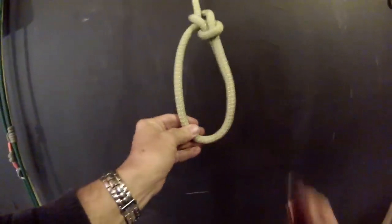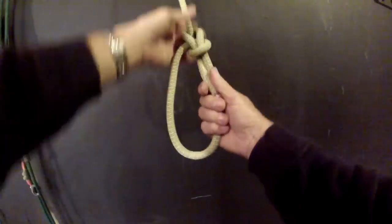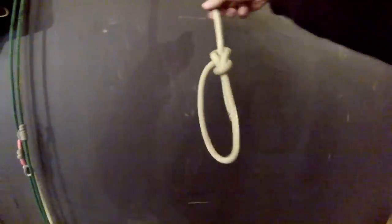Another issue with the Bowline is that even though it's been tied, dressed, set and loaded, there is a tendency when left unattended, it can easily roll out.